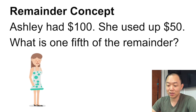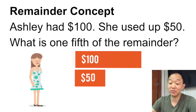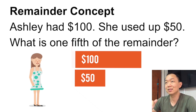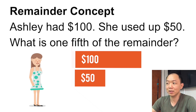This question had $100. She used up $50. What is one-fifth of the remainder? So with the remainder concept, the first thing you will always see is the word 'remainder.' So whenever you have a remainder concept, what's the first thing you need to do? We use a drop-down remainder.